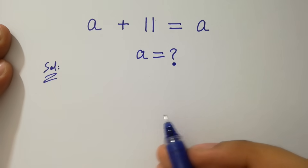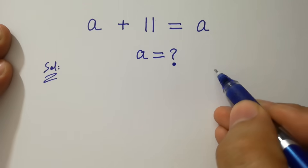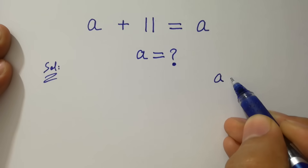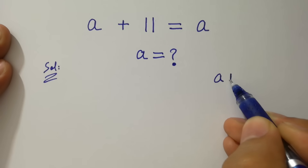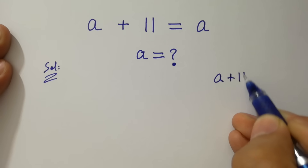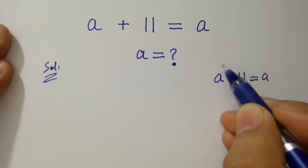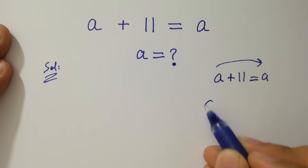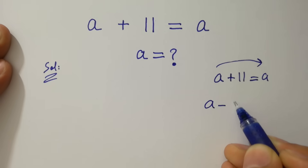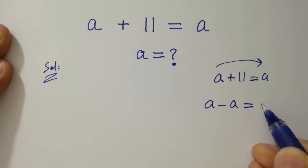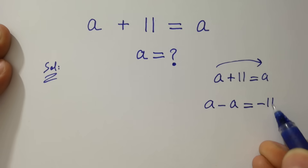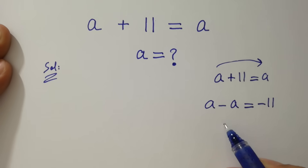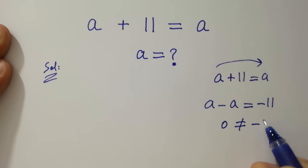If you see a plus 11 equal to a, then a minus a will be equal to minus 11. But a minus a is 0, which does not equal to minus 11.